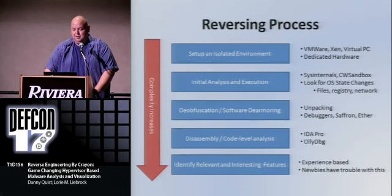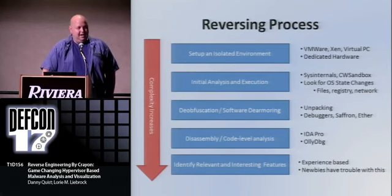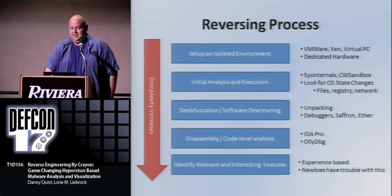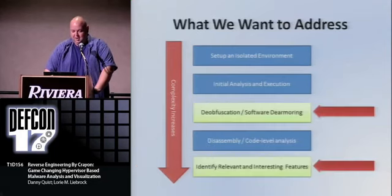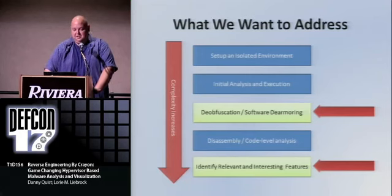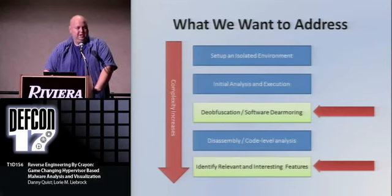Then we get into disassembly using IDA Pro, OllyDbg, or Dumpbin. The next part is identifying relevant and interesting features. This is where a lot of newcomers have trouble, and something I wanted to address. The two things we're specifically going to cover are dearmoring or deobfuscation using a tool called Ether, which is completely cool, and identifying interesting features using the visualization tool.